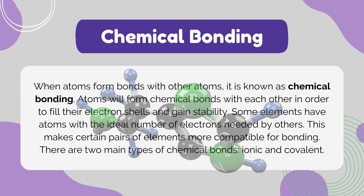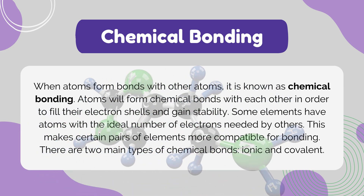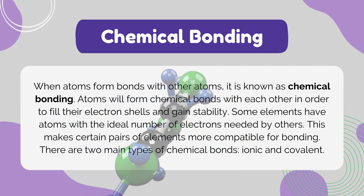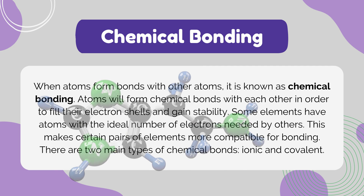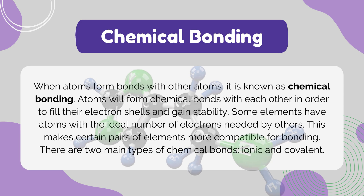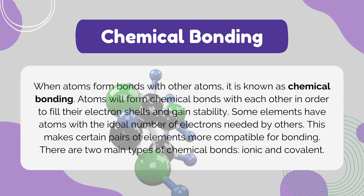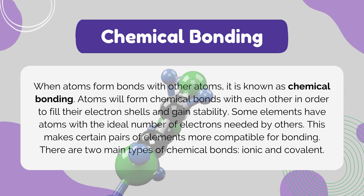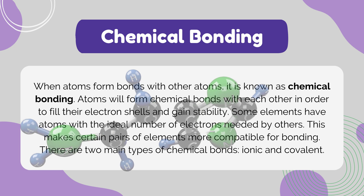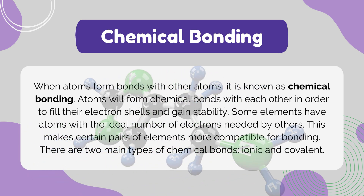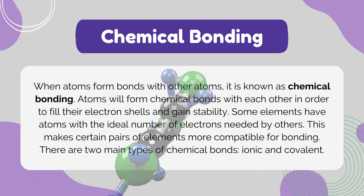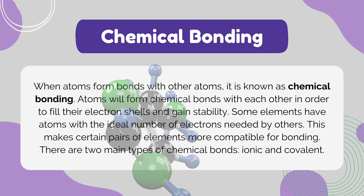When atoms form bonds with other atoms, it is known as chemical bonding. Chemical bonding involves the sharing, transfer, or redistribution of electrons between atoms, resulting in the formation of stable chemical compounds with predictable properties. These bonds can be covalent, where electrons are shared, or ionic, where electrons are transferred. Additionally, metallic bonding involves the delocalization of electrons within a metal lattice. These interactions govern the structure, stability, and reactivity of molecules and compounds in chemistry.